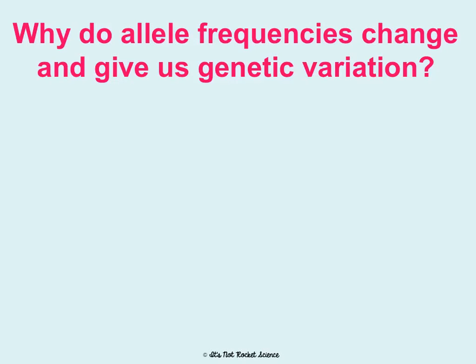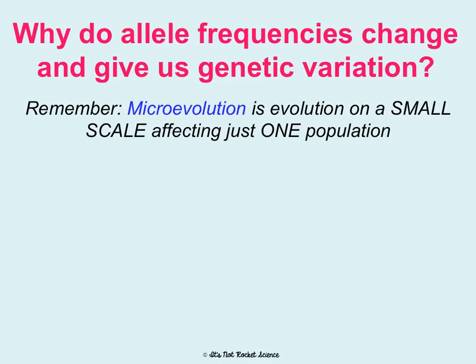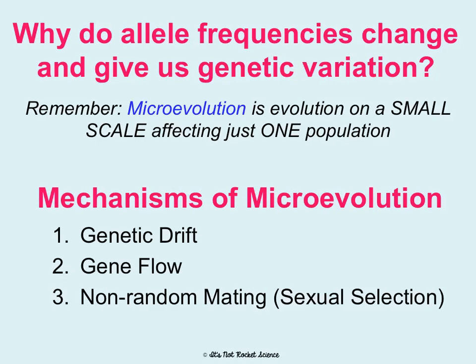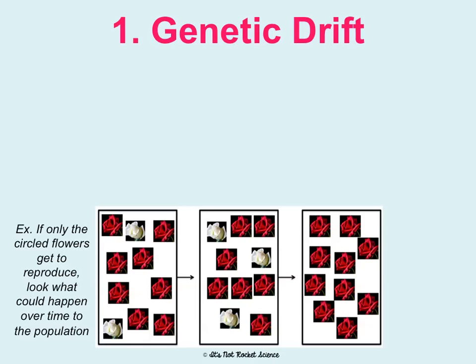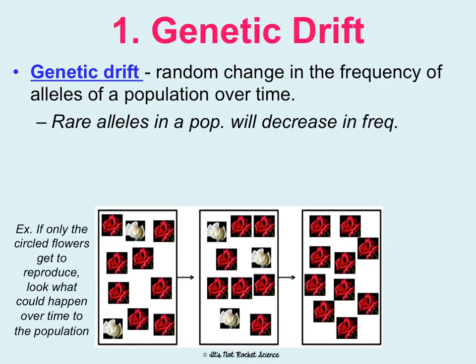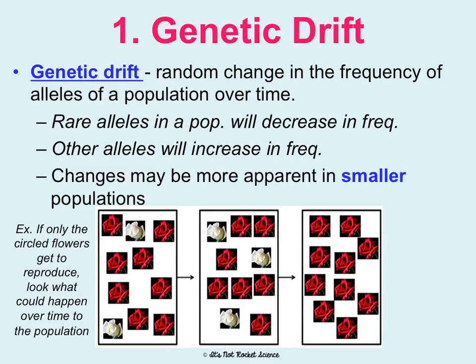So why do allele frequencies in the gene pool change, and how do we end up with even more genetic variation? Microevolution is evolution on a small scale affecting one population, and there are three mechanisms that create microevolution: genetic drift, gene flow, and non-random mating or sexual selection. First is genetic drift — this is random change in the frequency of alleles in a population over time. Rare alleles will just decrease in frequency and other alleles will increase, and we see this having a bigger effect in smaller populations.